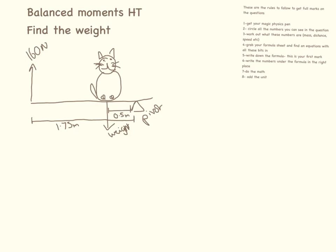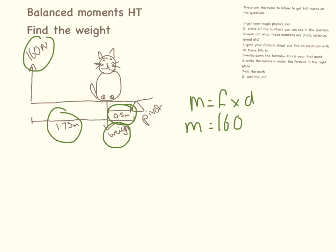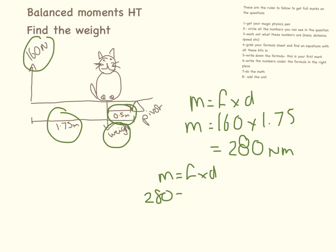Another example from an exam paper — this time we need to find the weight of Primrose. Circle all of the numbers. Moment equals force times distance: 160 times 1.75 equals 280 newton metres. Then: 280 equals force times 0.5. So 280 divided by 0.5 equals 560 newtons — and that is Primrose's weight.